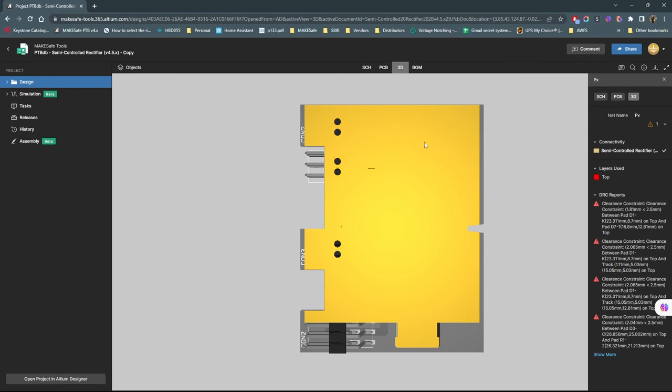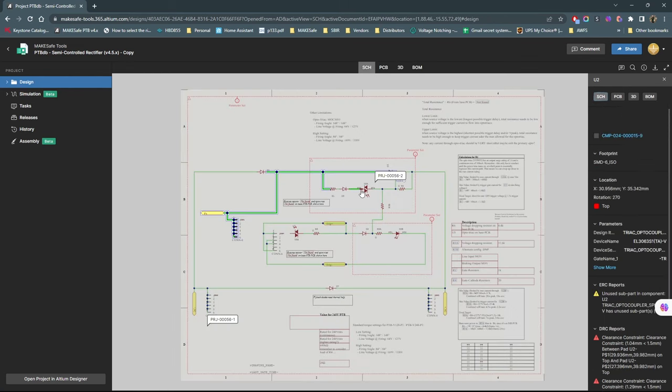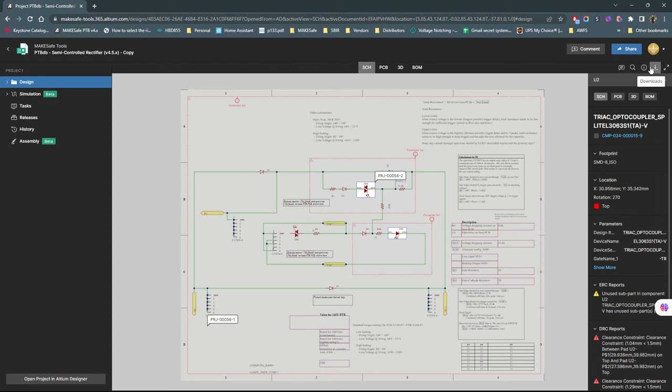Altium 365, it's kind of the cloud side of Altium. It's the way you can look at things in a browser where something as simple as, oh, I'm building a board. I need my reference schematic.